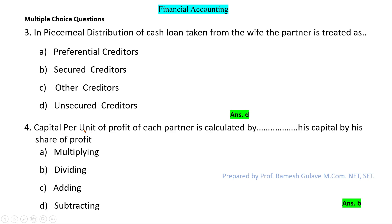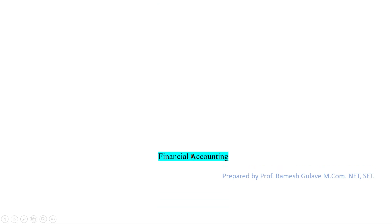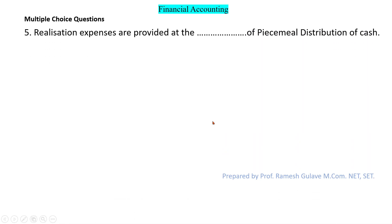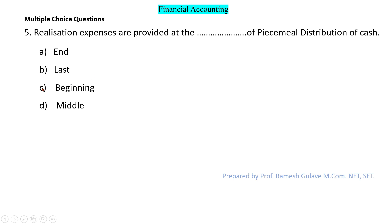The next question says: realization expenses are provided at the blank of piecemeal distribution of cash. The answer is option C — at the beginning we have to provide the realization expenses.